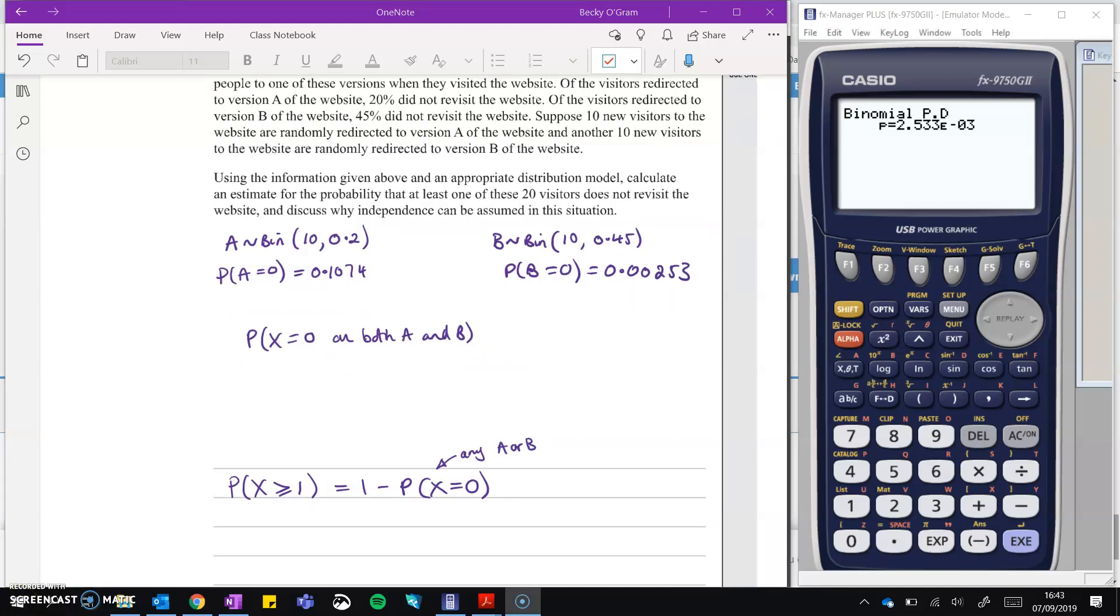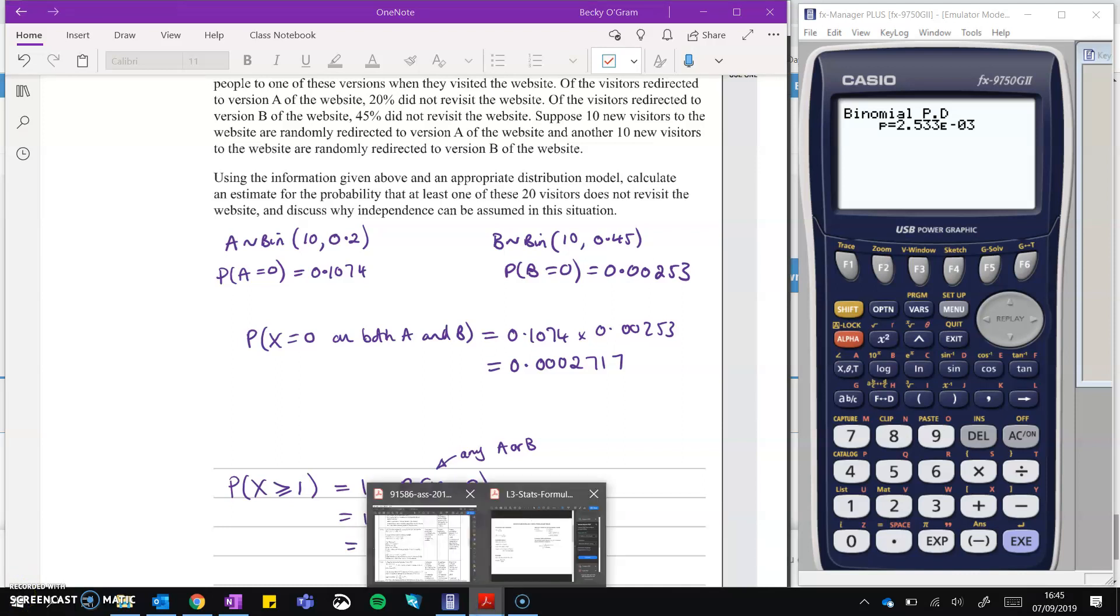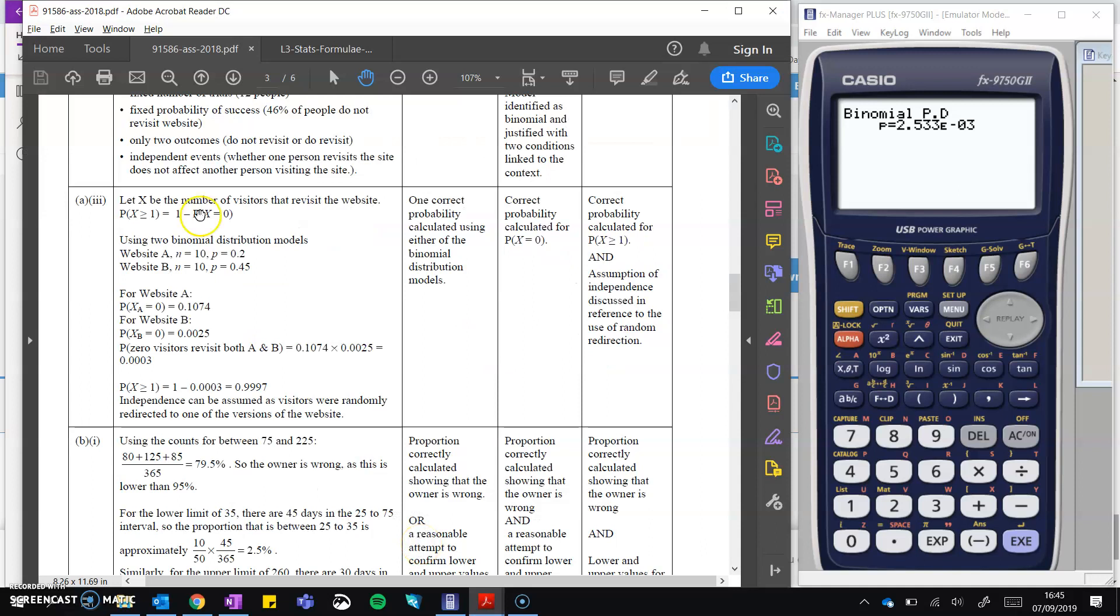And we get the probability of none on B will be 0.00253. So then we want the probability that X equals 0 on both A and B, so none from A and none from B means we are going to multiply them together. And then take that answer and use it down here as our total for getting none on either one of those distributions. So take it away from 1. That's 0.9997. That was a pretty tricky question.